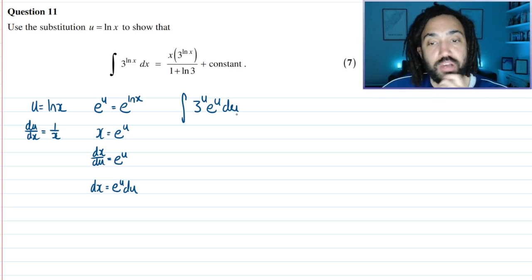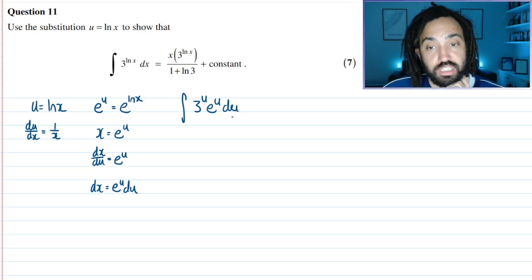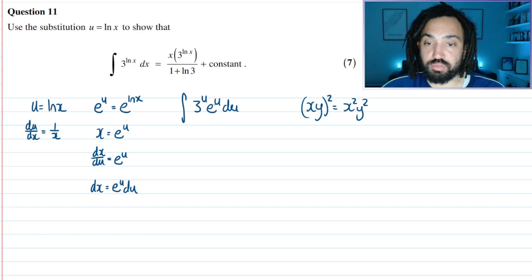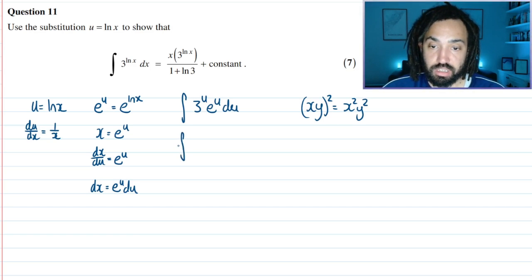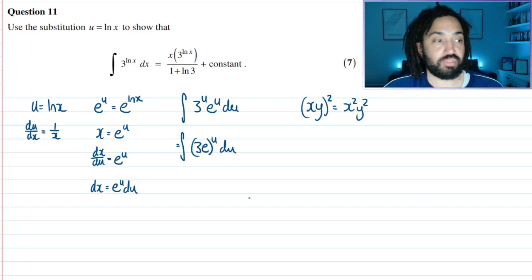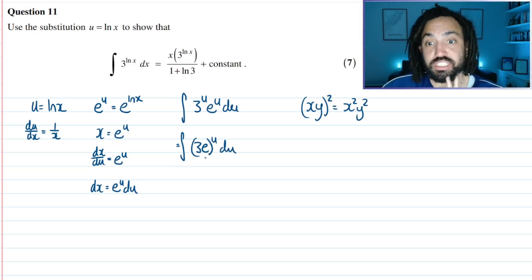You might be tempted here to use integration by parts, but you're not going to get very far quickly. The trick here is that when we have two things multiplied together which are both raised to the power u, we can write this as (3e)^u du. That's going to be much easier to integrate, still tricky though.